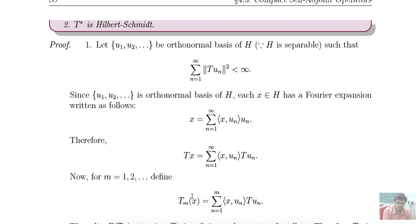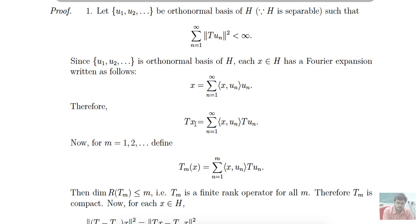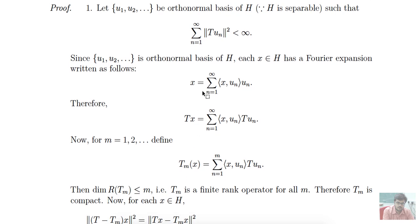Since T is Hilbert-Schmidt, let us fix an orthonormal basis. Let u₁, u₂, ... be the orthonormal basis for H — we can list such a basis because H is separable, which is needed for defining Hilbert-Schmidt operators. For such a basis, Σ‖Tuₙ‖² is finite. Now we want to show T is compact.